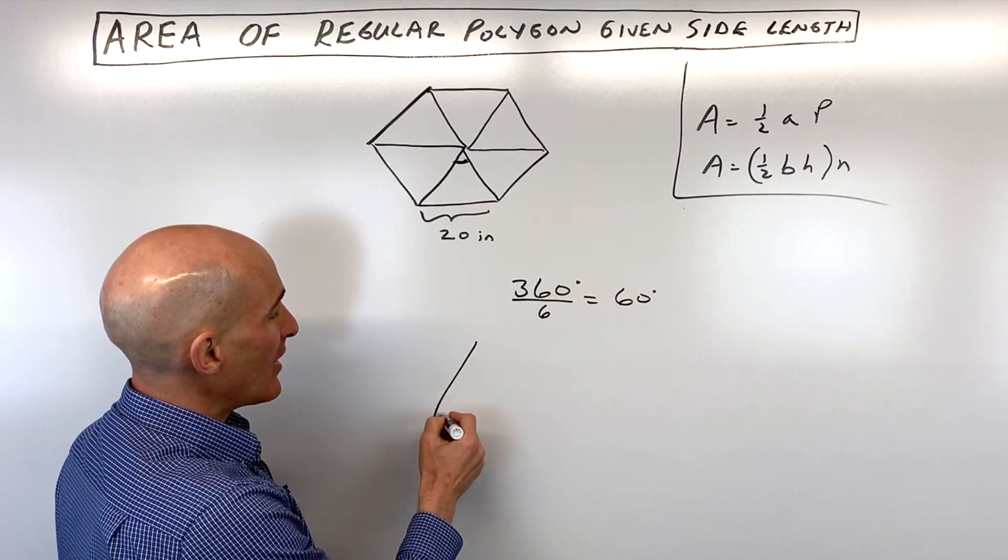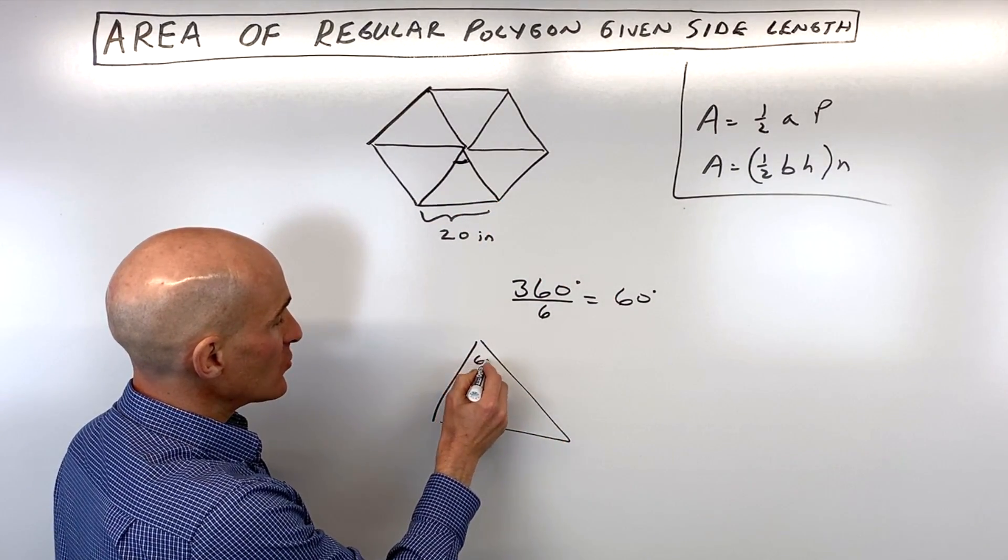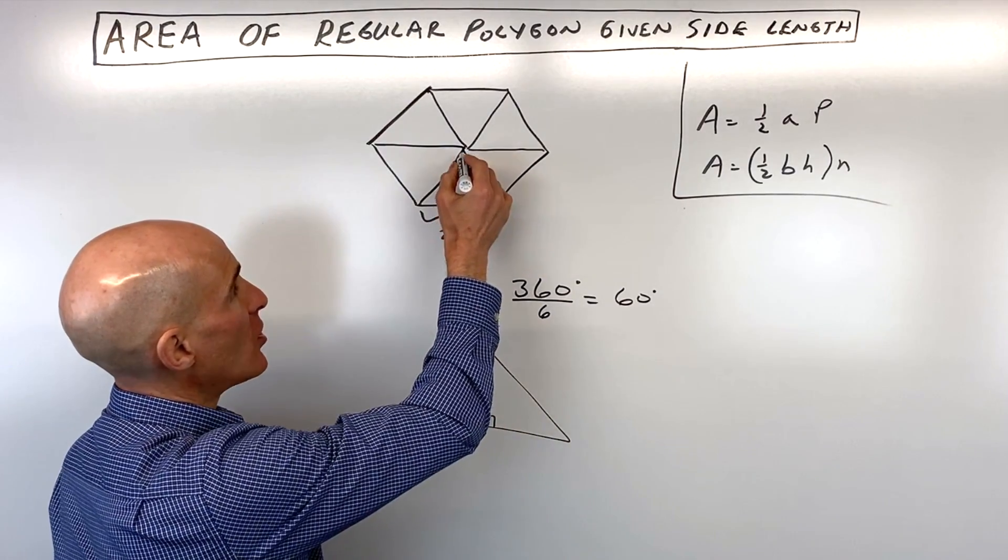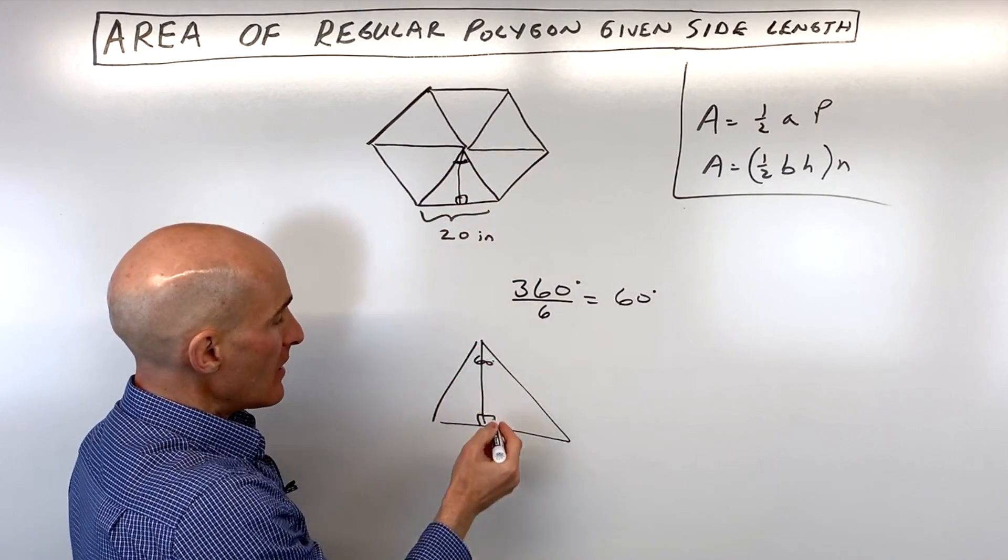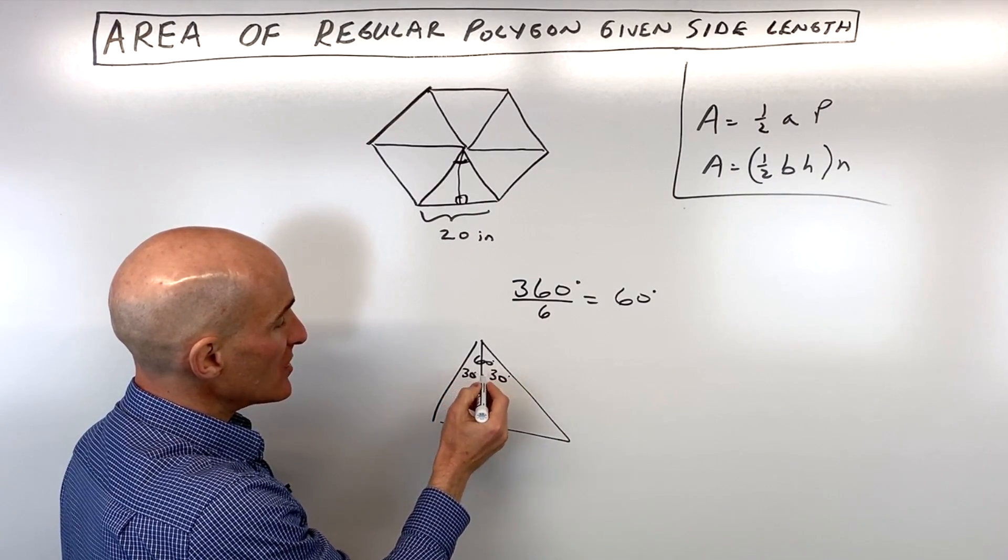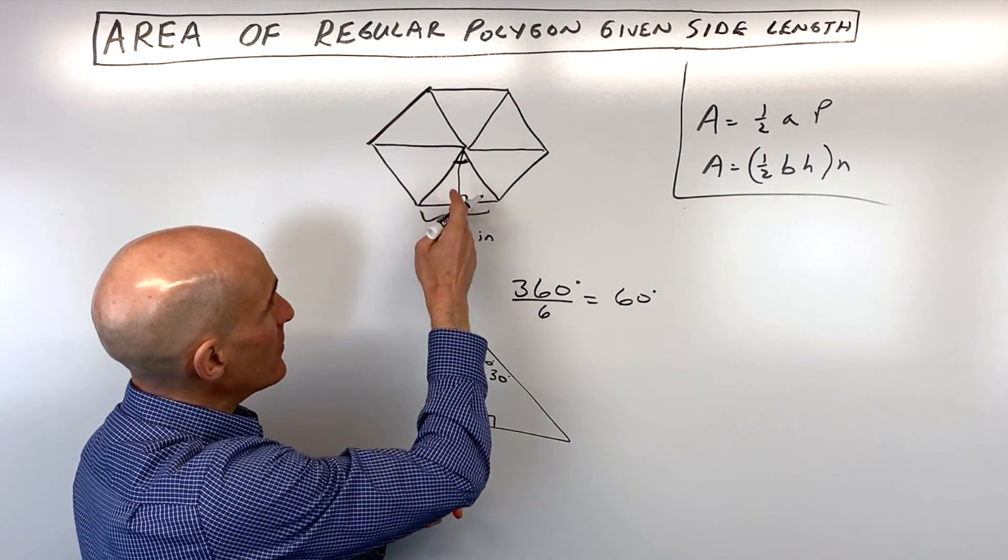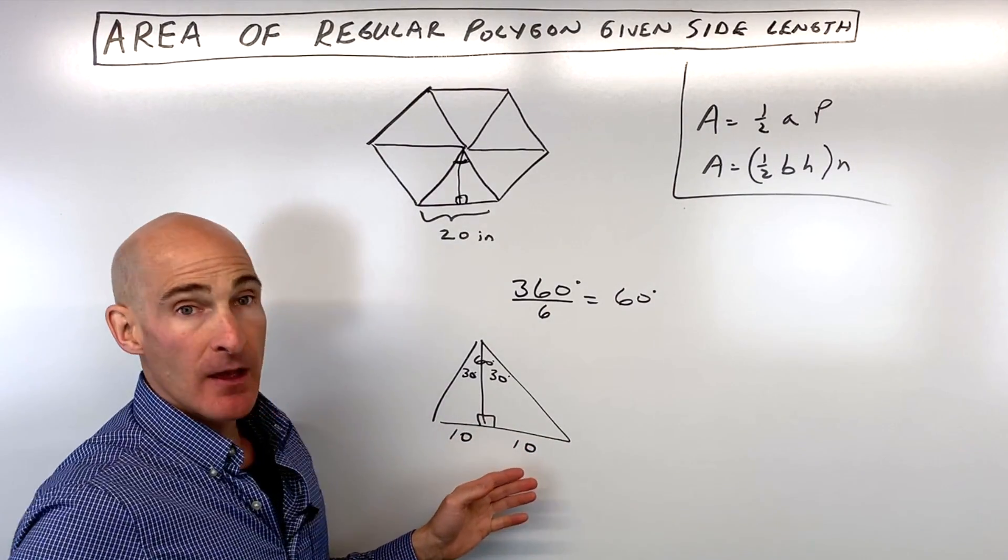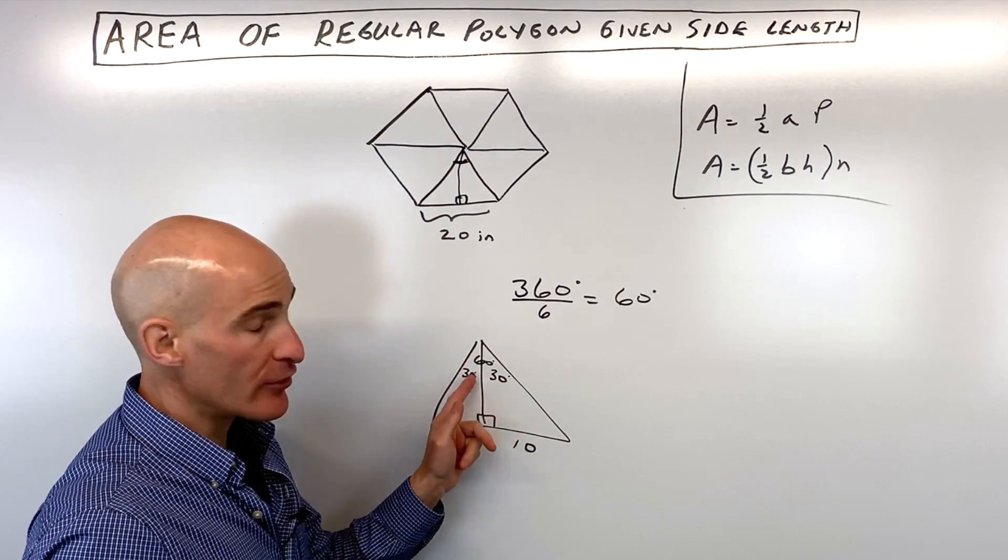Now, if we take a look at this triangle down here, this is a 60 degree angle. If we drop a perpendicular, which is called the apothem, that's going to split this angle in half. So now it's 30 degrees and 30 degrees. It's also going to bisect the base, so each one of these is 10 inches. But how do we find the height of this triangle, the apothem?